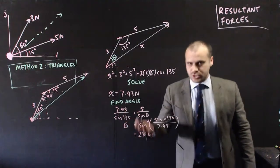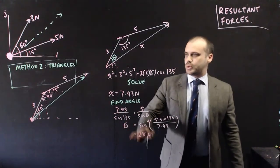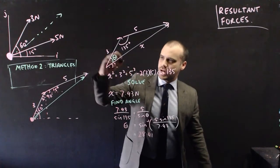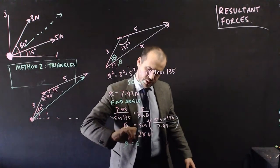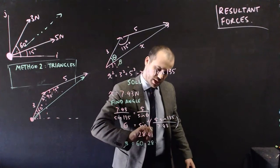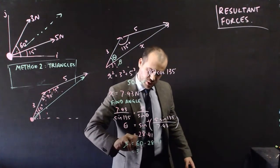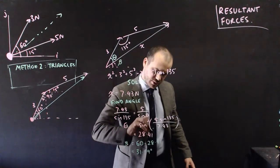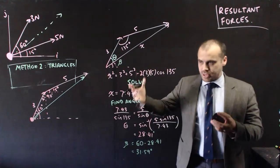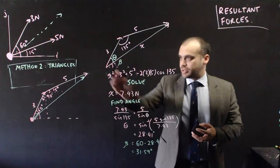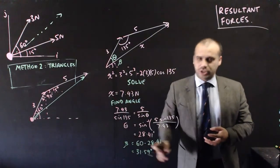So there's the sine rule there. Theta is equal to 28.41, which means that this unknown angle here, which I can call beta, would be equal to 60 minus 28.41, which is 31.59 degrees. So, using this second method, I've been able to find the magnitude of that force and also the direction of that force.